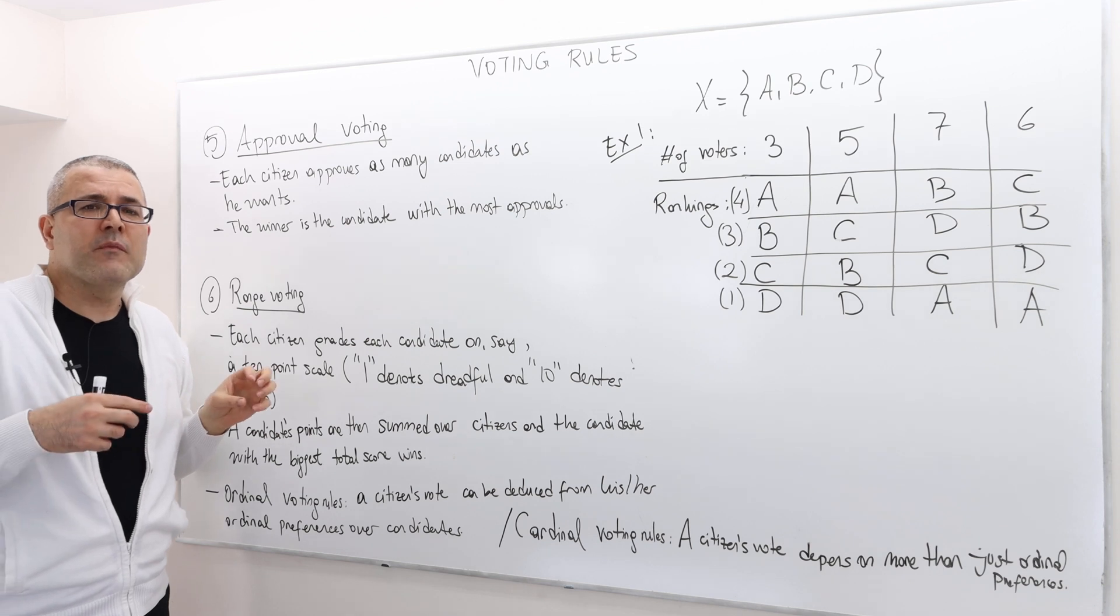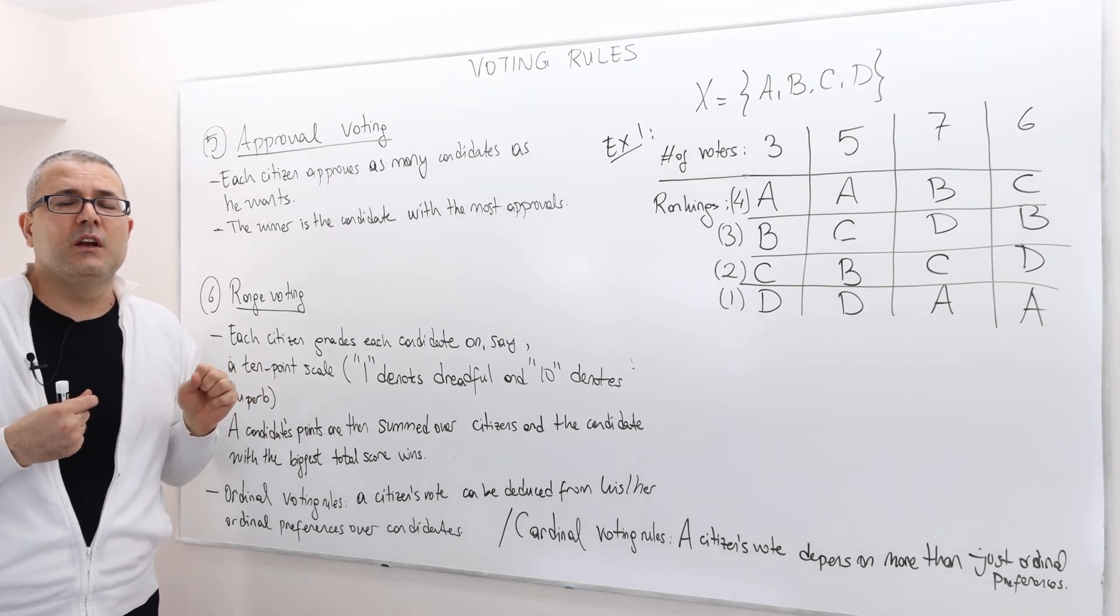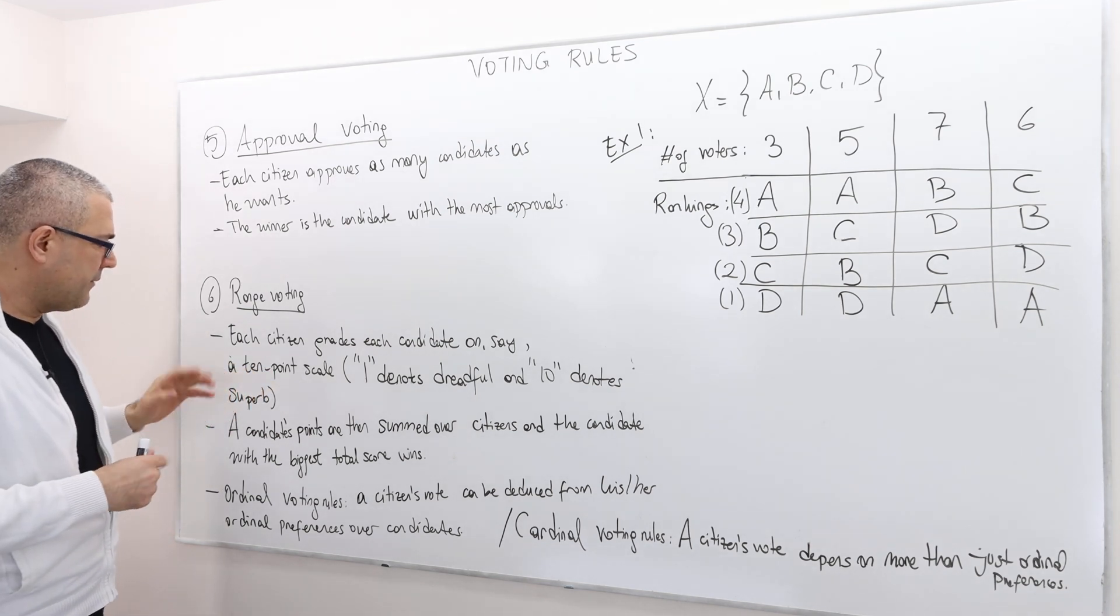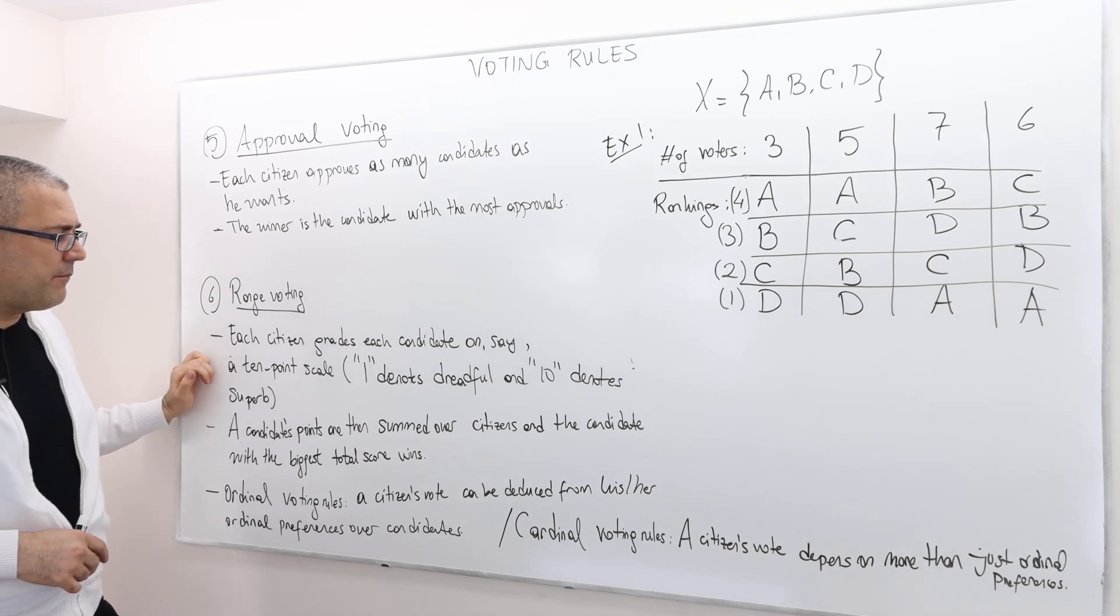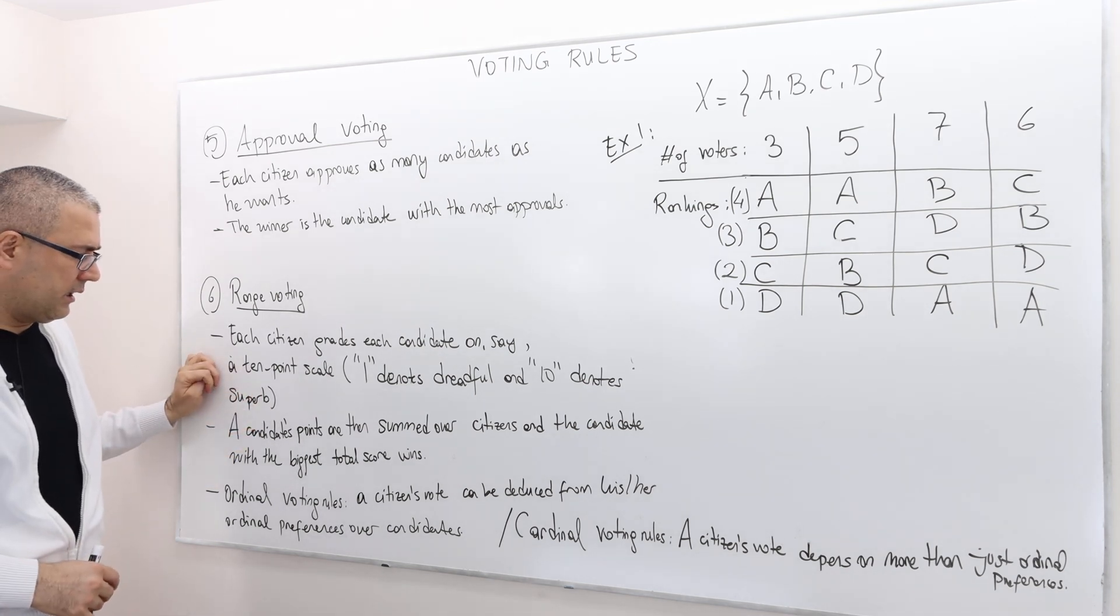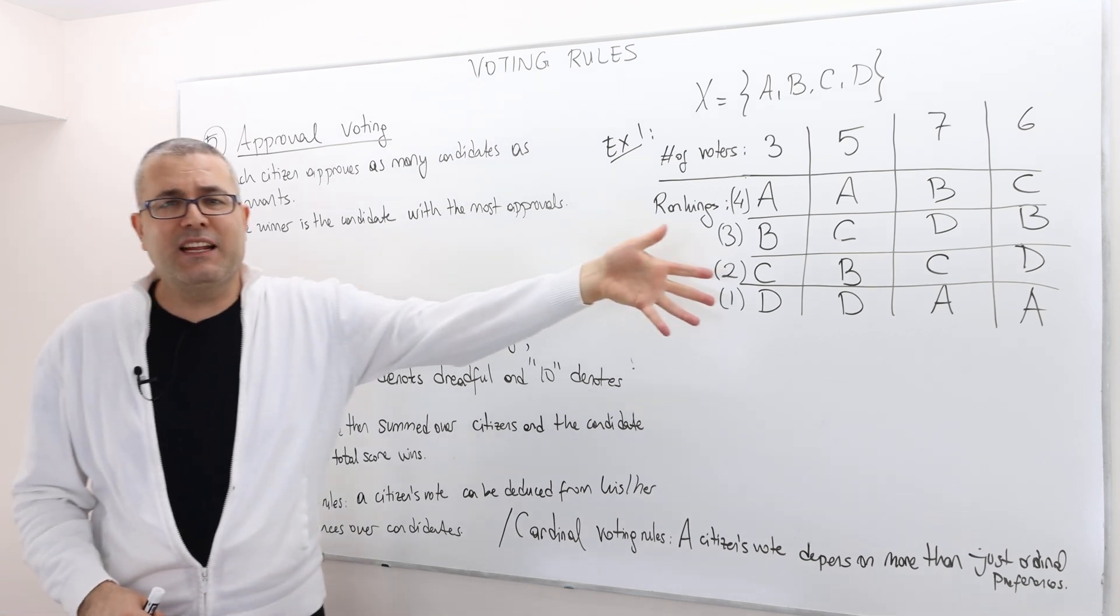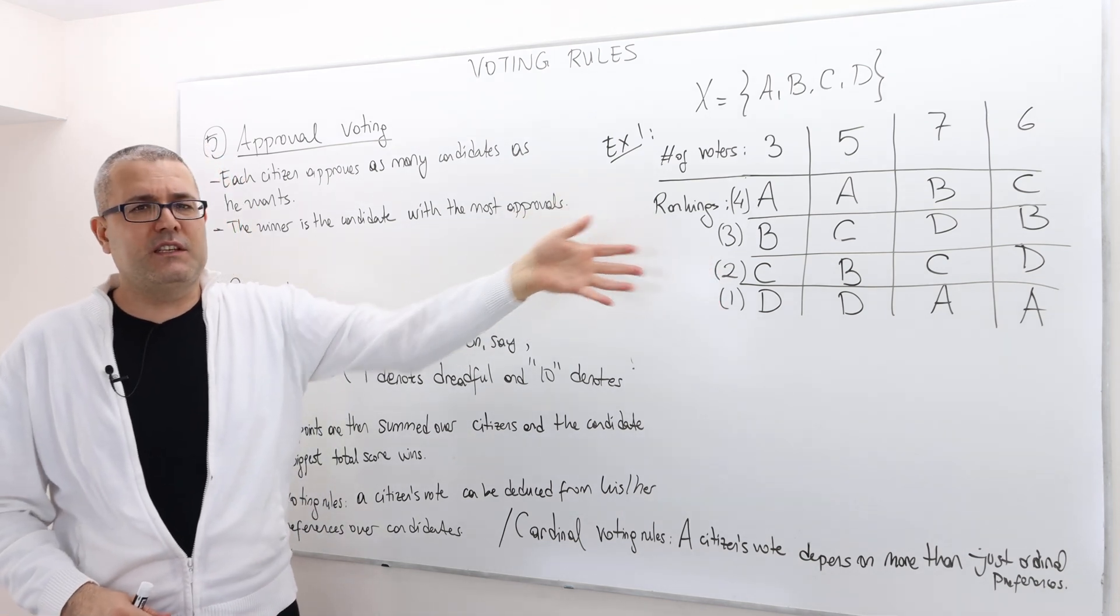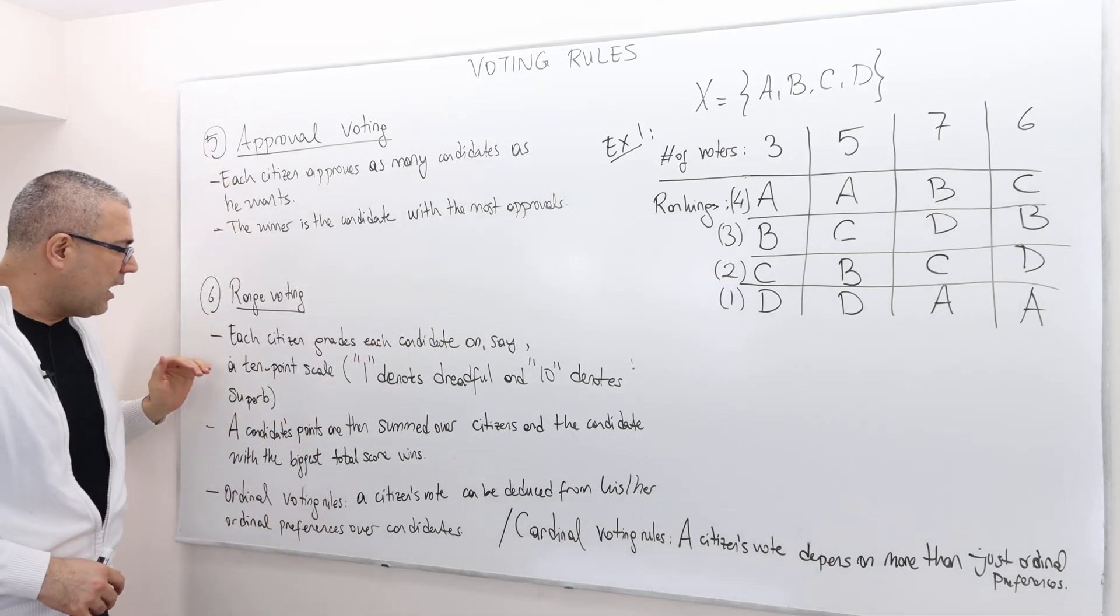You see what I mean? So the ordinal preferences do not include this piece of information, whereas these two voting rules actually aim to capture that information. So, these are not ordinal voting rules, and I can't just apply them to those simple frameworks.